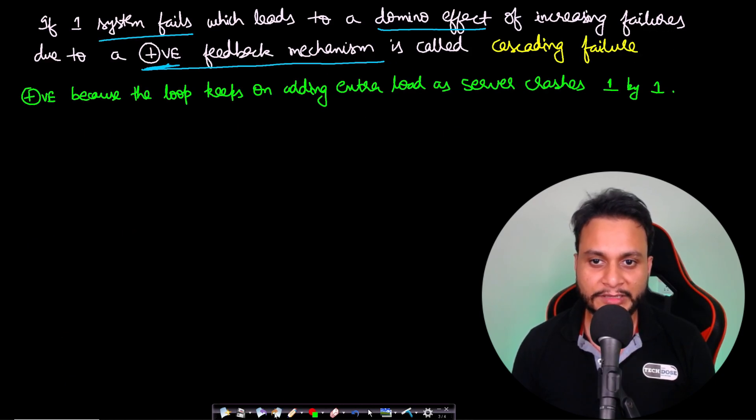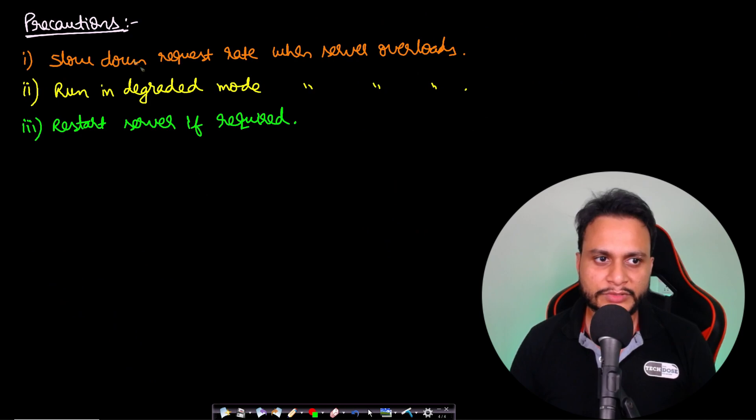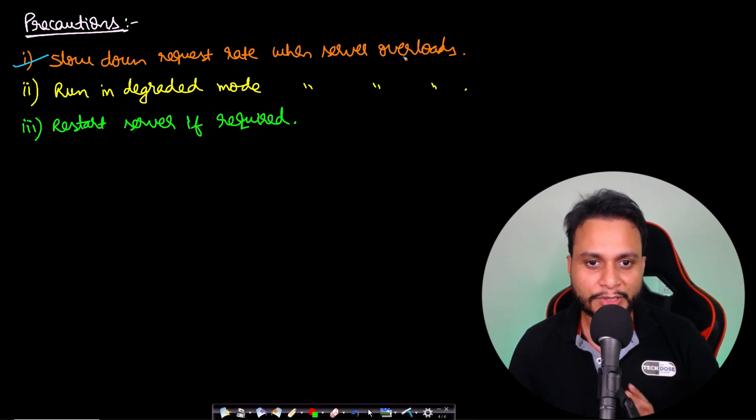Now some of the precautions which you can take is: you can slow down the request when the server overloads, just to take precaution that it doesn't load beyond the limit and hence crashes. Second thing you can do is you can run in a degraded mode when your server is overloaded, because maybe many of the animations are unnecessary and are not important for doing the job. So maybe you can stop animations and things like that which actually doesn't help users to serve their request.